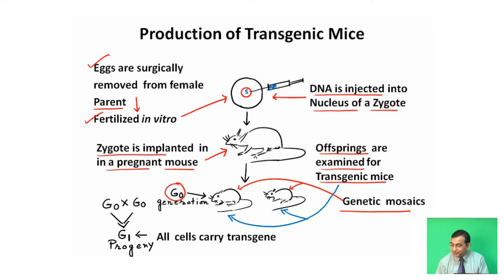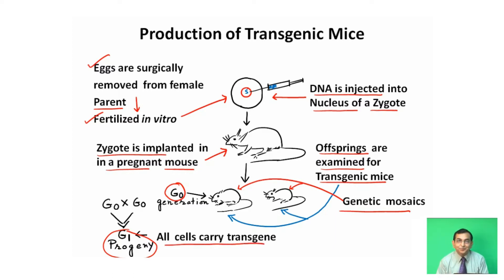Genetic mosaics of the G0 generation, when mated, give us G1 progeny. In G1 progeny, all cells carry transgenes. These cells which carry transgenes are inherited from generation to generation — that is, the genes are attached with the mouse chromosomes and can be inherited to next generations.